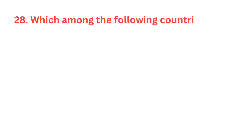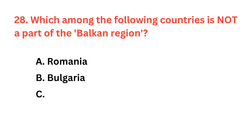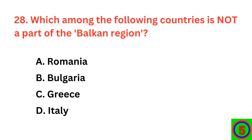Which among the following countries is not a part of the Balkan region? The correct answer is option D, Italy.